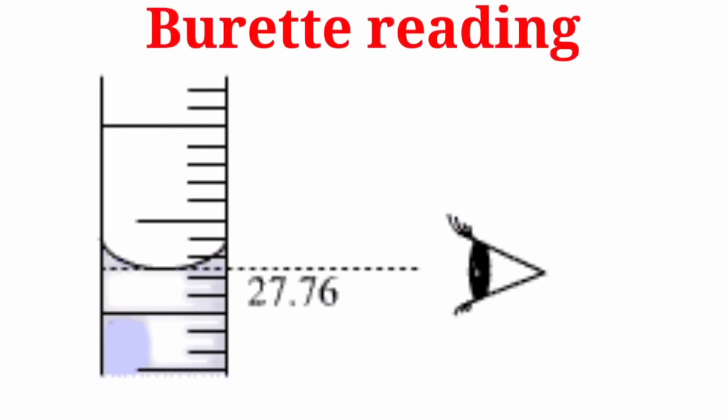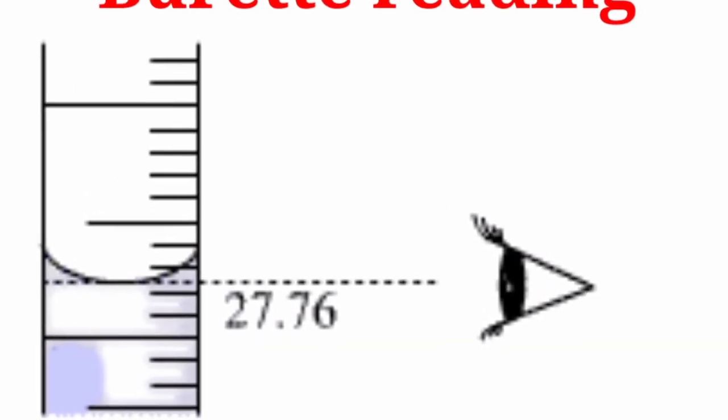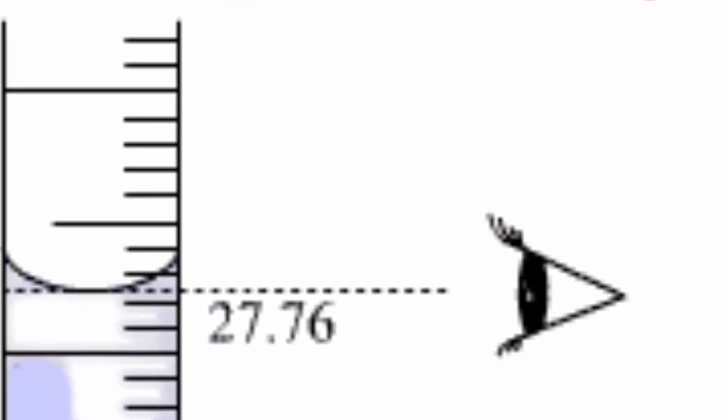In order to measure the amount of solution added in or drained out, the burette must be observed at eye level, straight to the bottom of the meniscus.